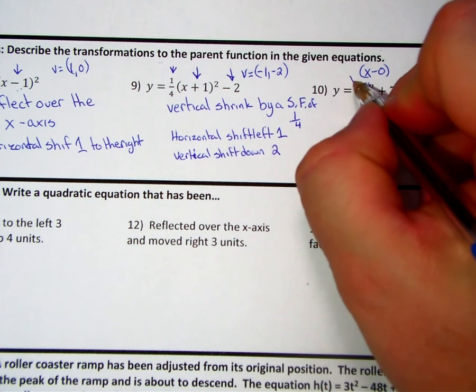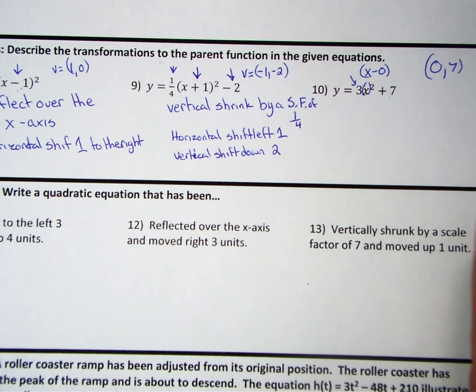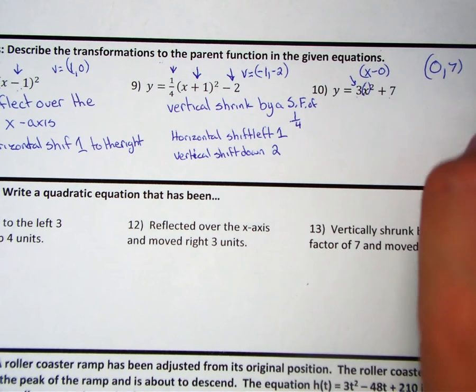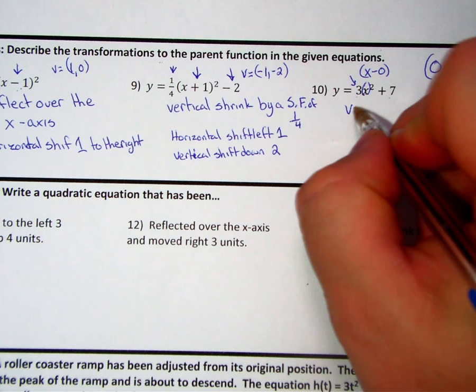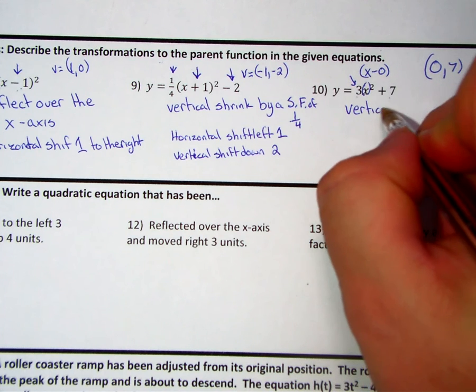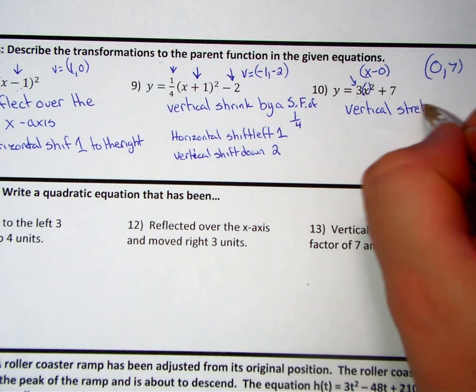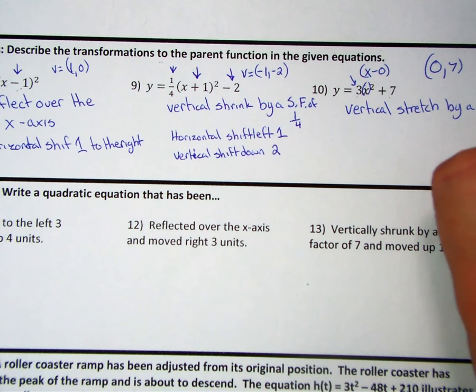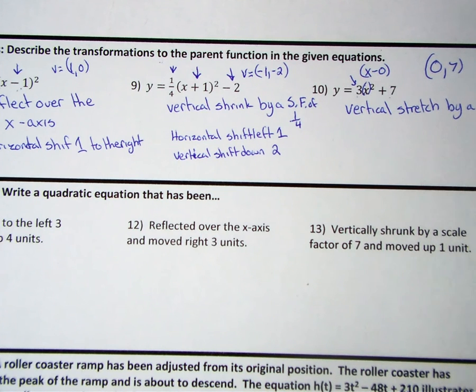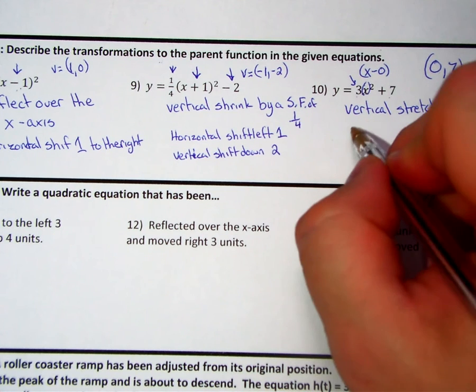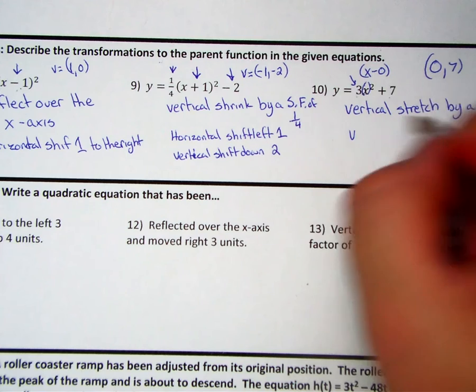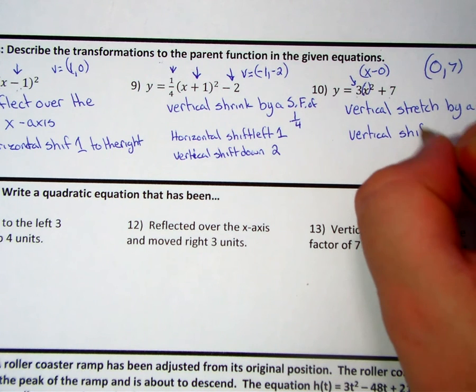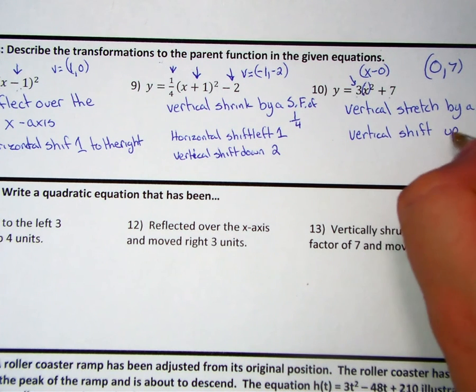We have an a value of three, which we know is going to give us either a stretch or a shrink. This case it's greater than one, so it's going to give us a stretch. So we have a vertical stretch by a scale factor of three, and we have a vertical shift up seven.